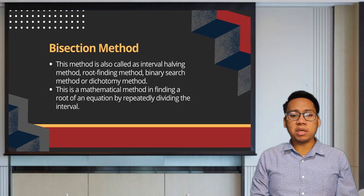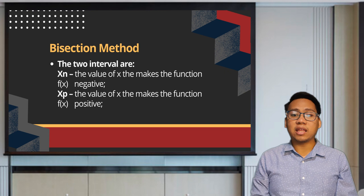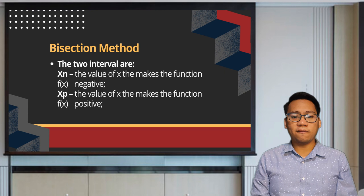The intervals are xn and xp. In this method, the two intervals should be identified in order to perform the computation. xn is the value of x that makes the function negative, while xp is the value of x that makes the function positive.